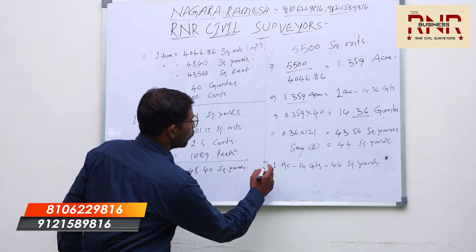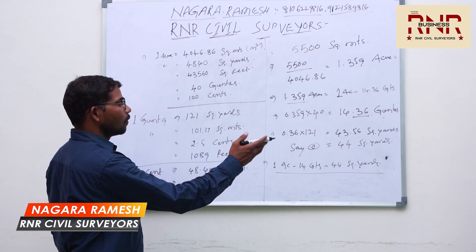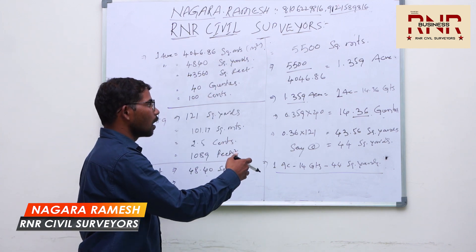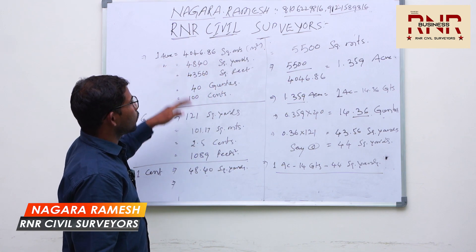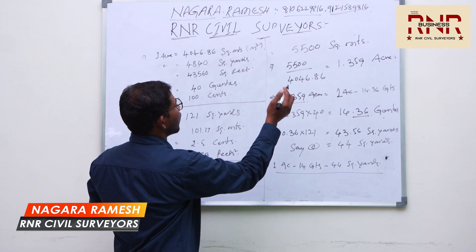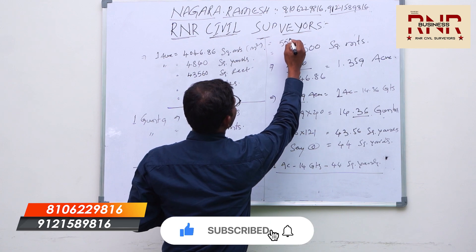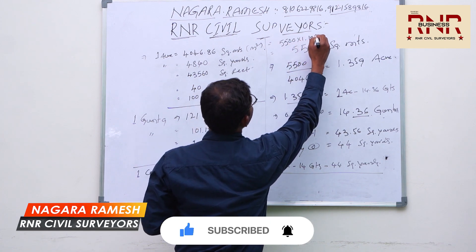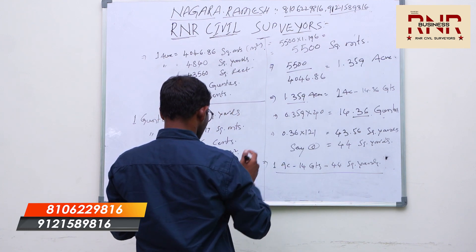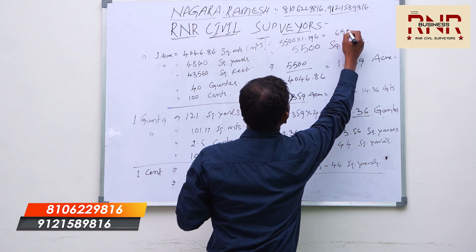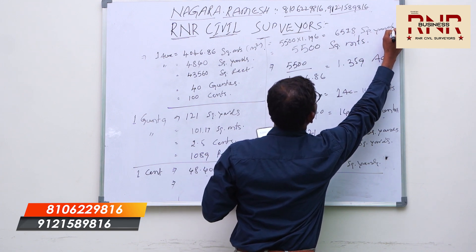The total land is 1 acre, 14 guntas, and 44 square yards. You can make direct calculations in acres and square yards. For example, 5500 multiplied by 1.196 directly gives square yards, which equals 6578 square yards.